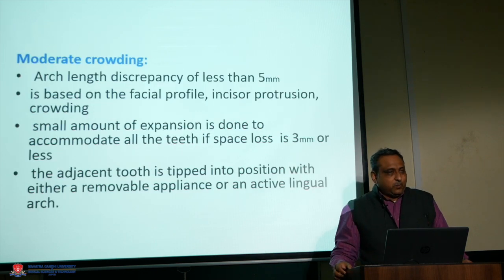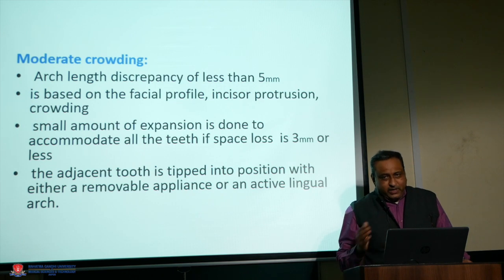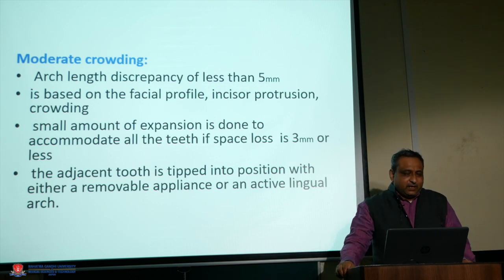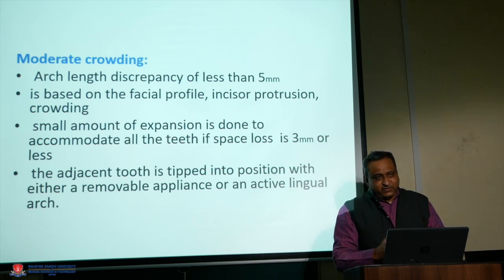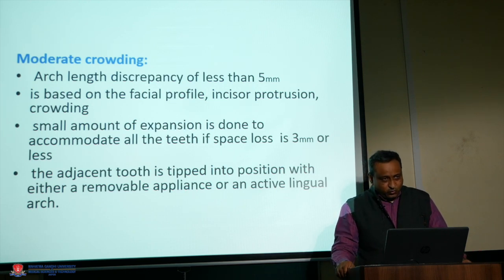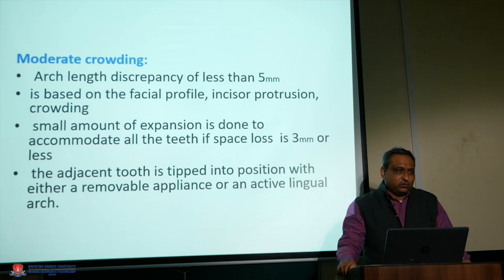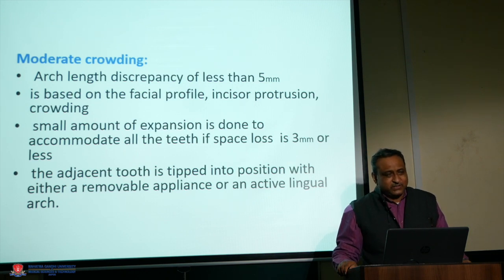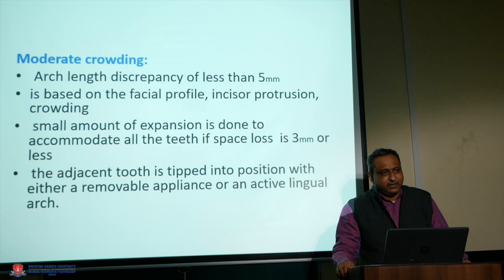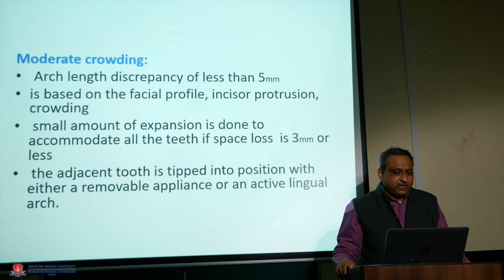For moderate crowding — more than 2 mm but less than 5 mm — you can use a removable appliance with expansion screws to expand the arch. You cannot decrease total tooth material, but you can expand arch length. This can successfully provide 3 to 4 mm of space, allowing teeth to come into occlusion without extraction.